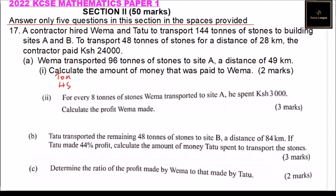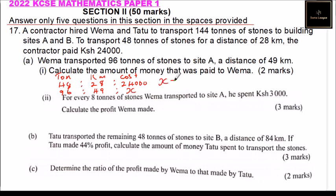We have 48 tons of stone transported 28 kilometers, and the cost paid was 24,000. So Wemma transported 96 tons a distance of 49 kilometers. Let's say his cost was X. So X is equal to 24,000. When he transported 49 kilometers, it means the rate was at 28, so the payment would rise in the same ratio — that is 49 over 28.